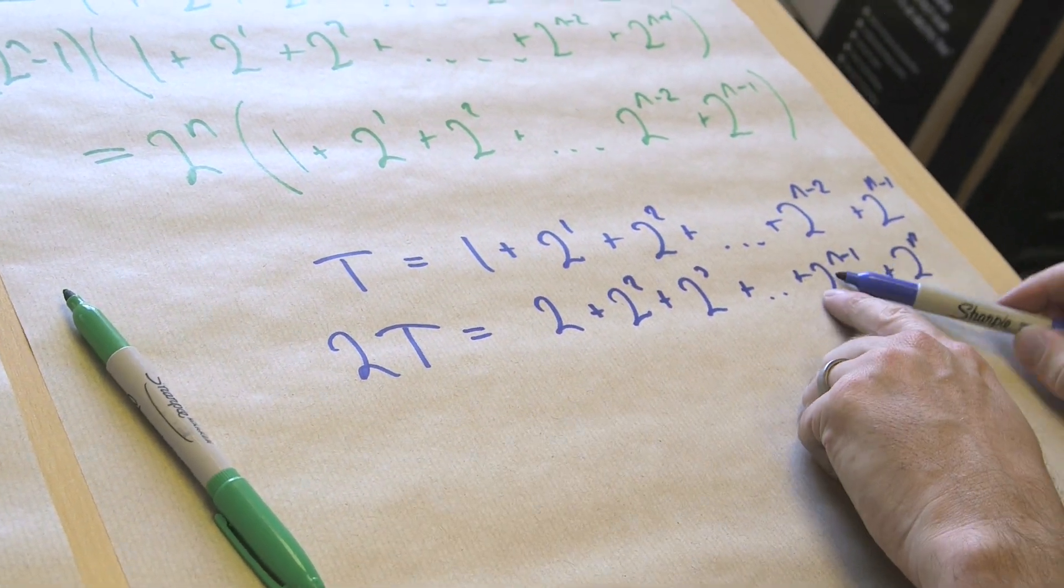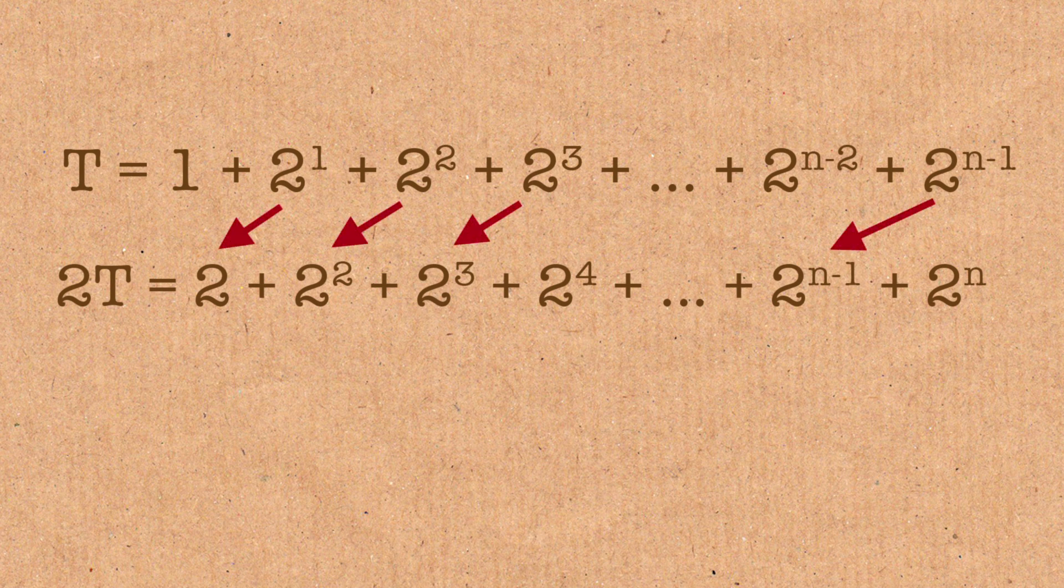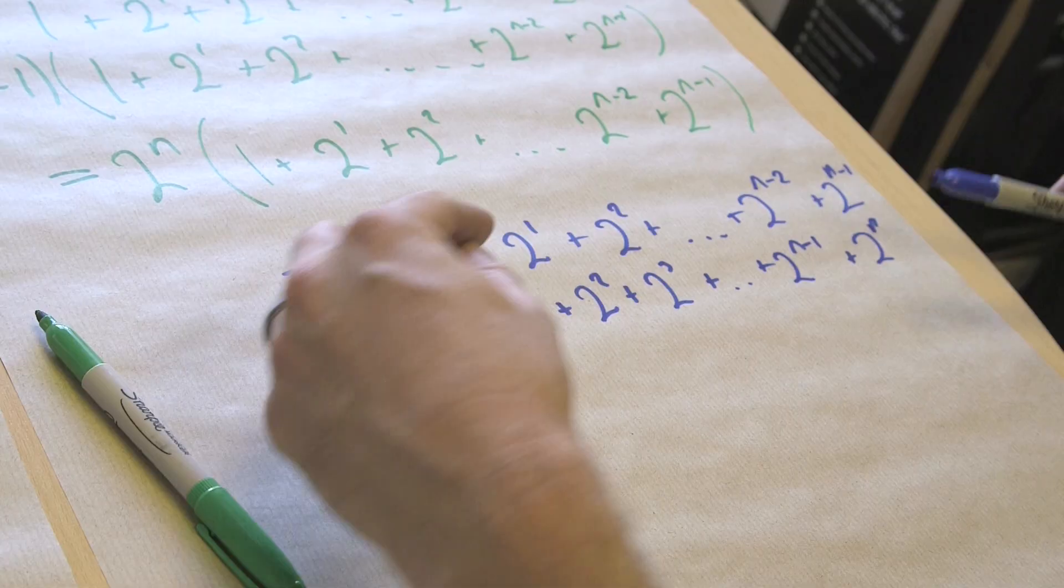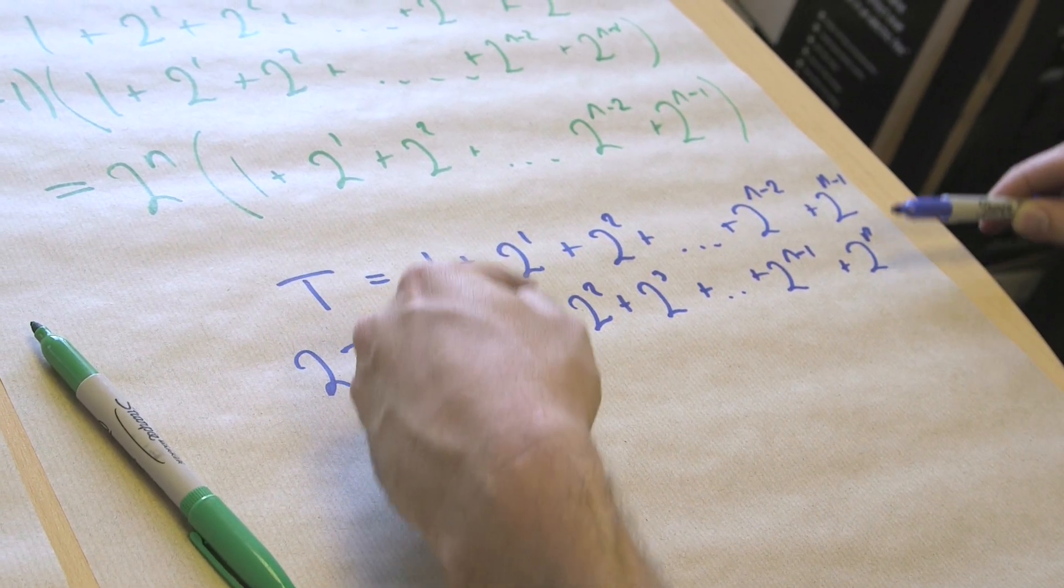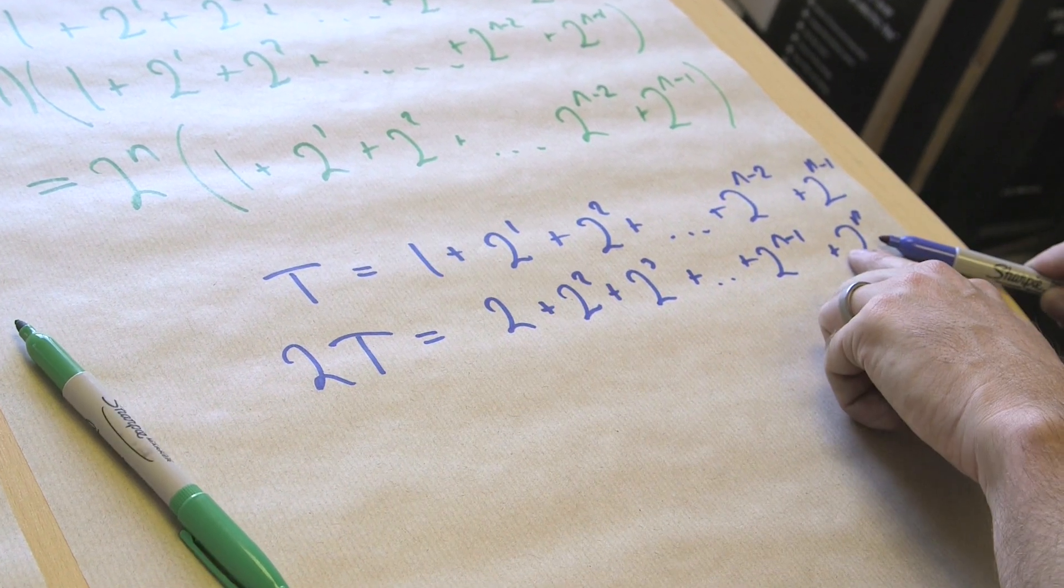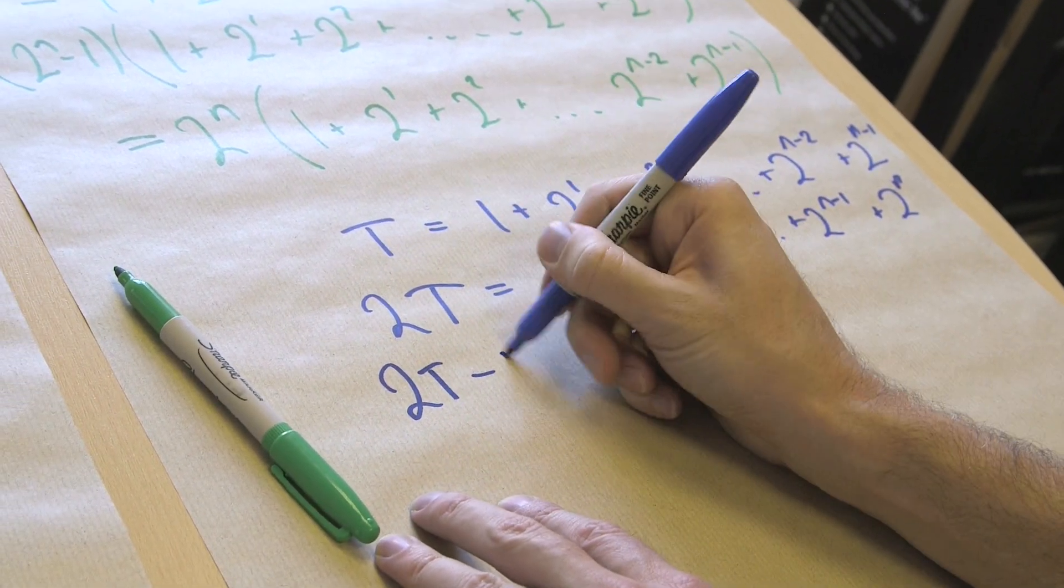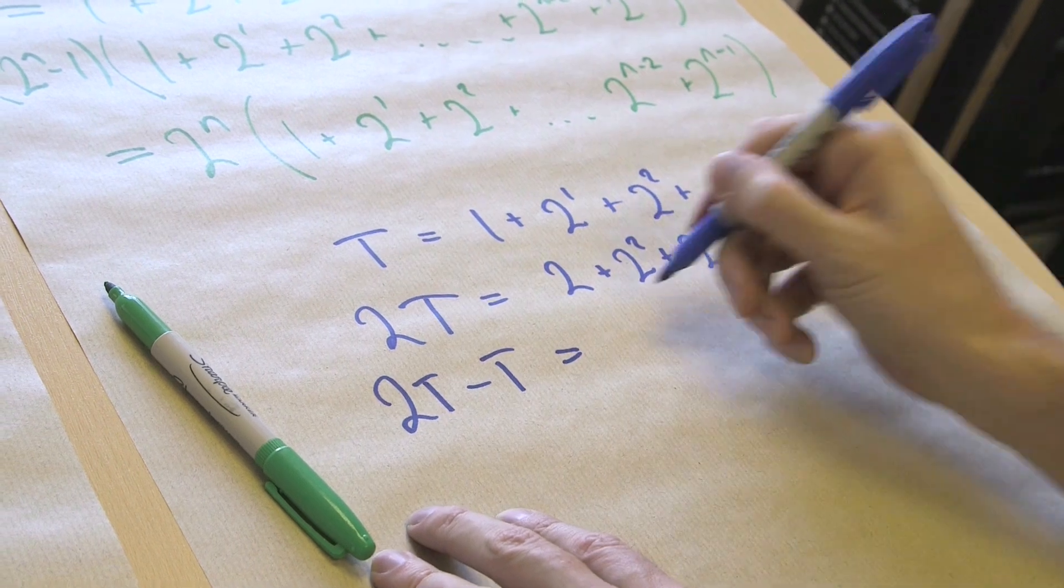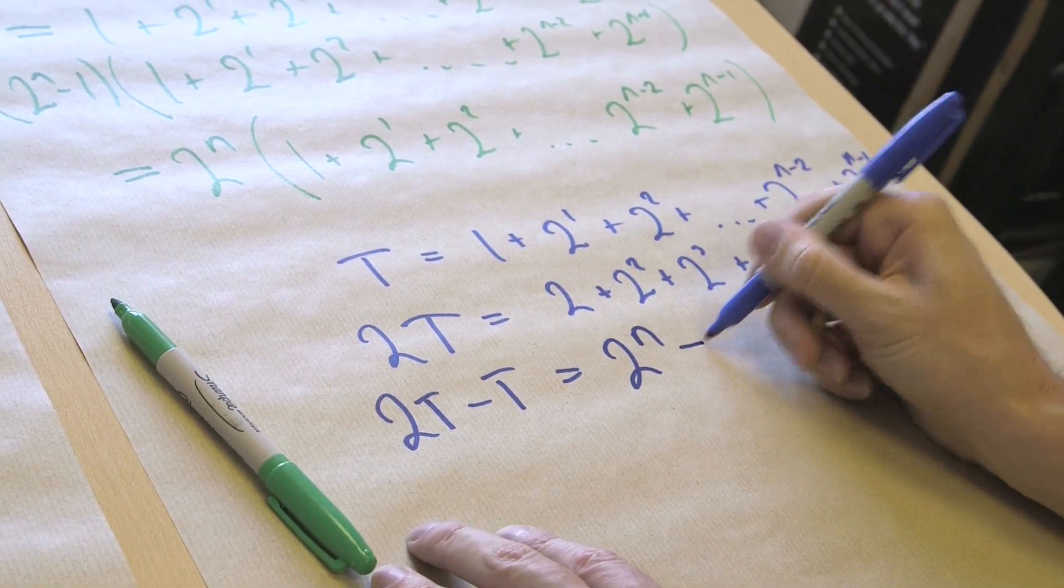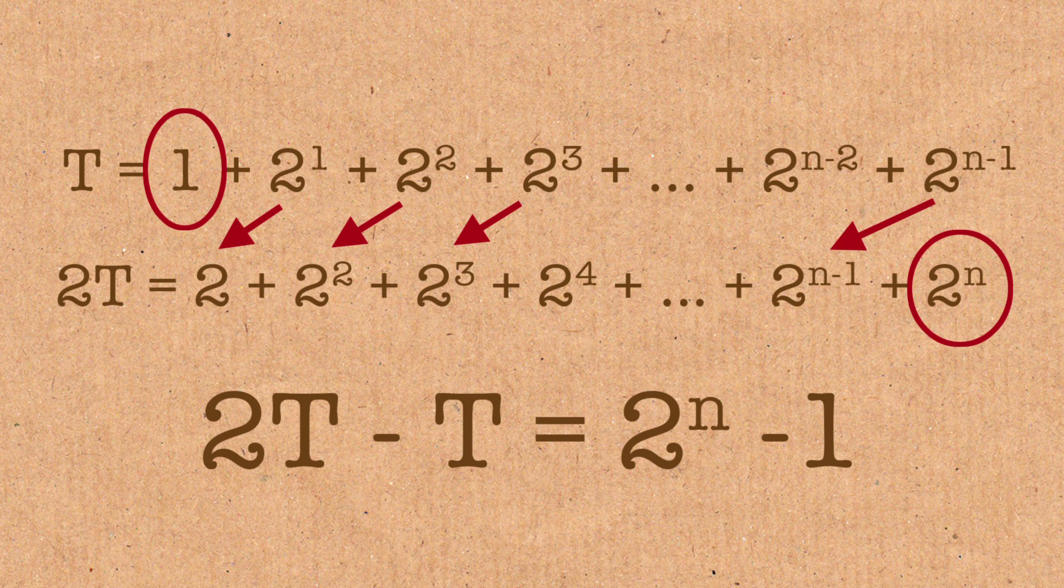And actually, that is the same as that, that term would be the same as that term, all the way down, that is the same as that, that is the same as that. So in fact, all of these match, apart from the beginning one here, and the end one here. So we want to cancel all of these out. If I take all of these, and subtract all of these, I'll just be left with this one, subtract that one. So 2t minus t, this row minus that row, equals 2 to the N minus 1. And so in fact, 2t minus t is just t. So the total is 2 to the N minus 1. And we call this the geometric series.